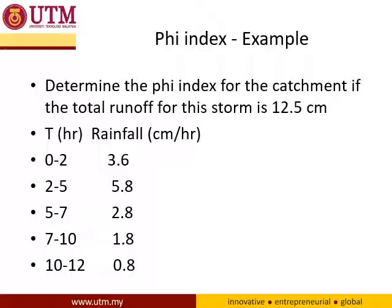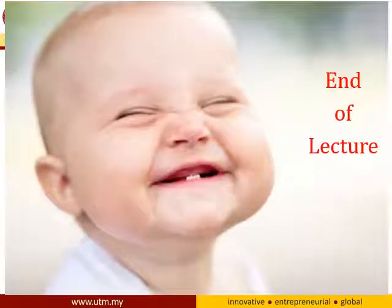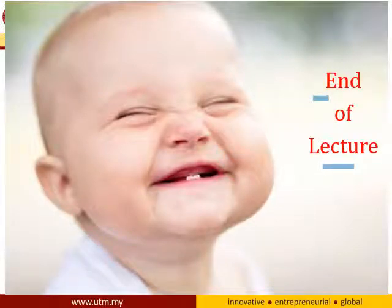These are some example questions. For this case, I will share the solution in e-learning, and then you may try to do another assignment. You have two assignments: the Horton assignment and the phi index assignment. I will give you the solution for the phi index example. This is the end of our chapter on losses — it covers infiltration and evapotranspiration. Thank you for watching.